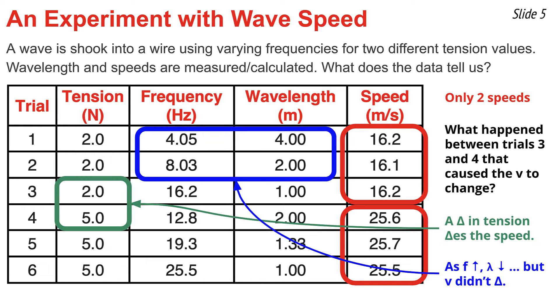The overall conclusion from the data is that changes in frequency only affect wavelength but not speed while a change in tension would affect the speed of the wave.